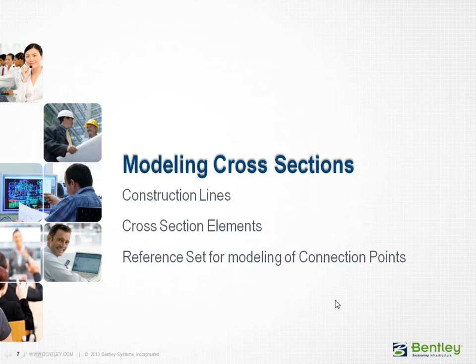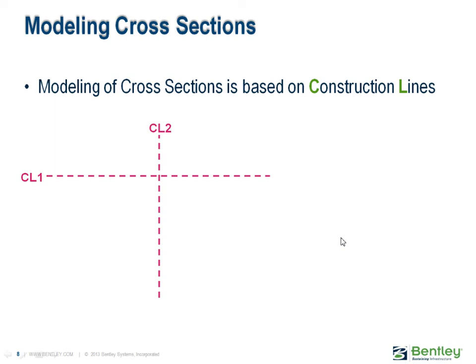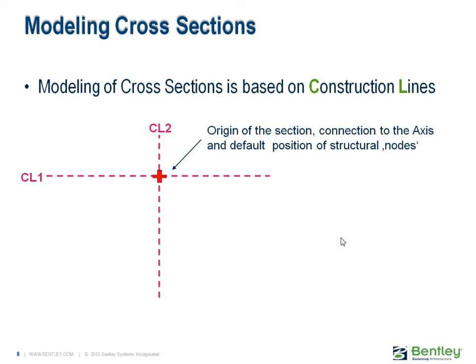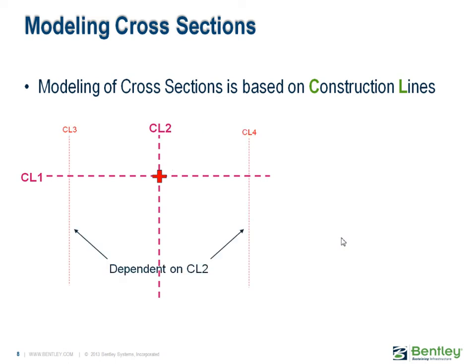You will also learn how to model a general cross-section based on construction lines and cross-section elements. Furthermore, you will learn how to define cross-section points for later reference in modeling realistic support conditions. When starting a new cross-section, you will see two basic construction lines. The intersection of the two basic construction lines is the origin of the cross-section, and when generating the model, this will be the reference to the axis. All other construction lines are defined relative to existing construction lines and will keep the dependency information from the modeling.